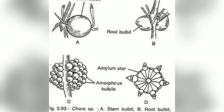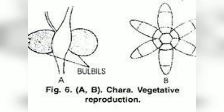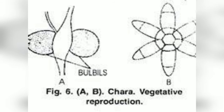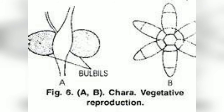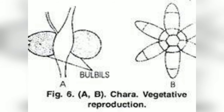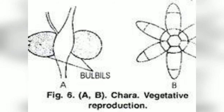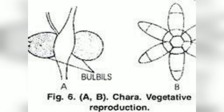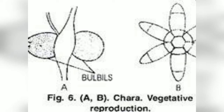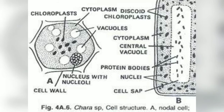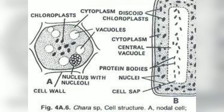The fourth type is secondary protonema. These are tubular structures which develop from primary protonema, or from basal cell rhizoids. They can also form new plants.